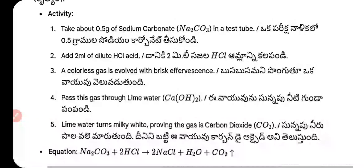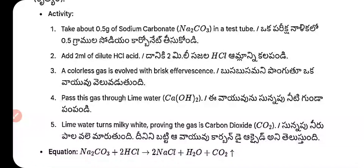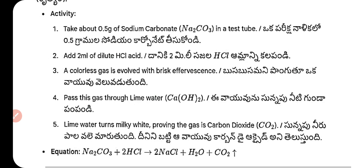Activity — metal carbonate with acid: Take about 0.5 g of sodium carbonate (Na₂CO₃) in a test tube. Add 2 ml of dilute HCl. A colorless gas is evolved with brisk effervescence. Pass this gas through lime water Ca(OH)₂ — lime water turns milky white, proving the gas is carbon dioxide.